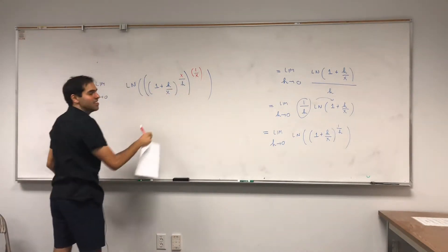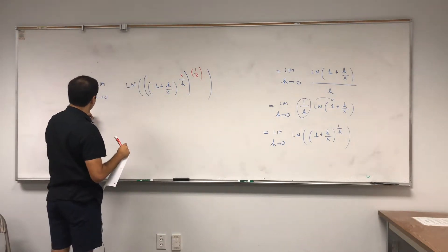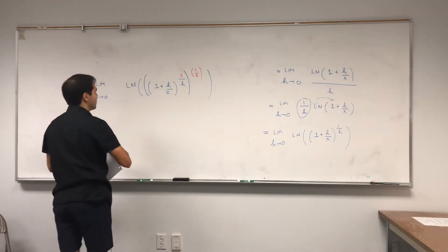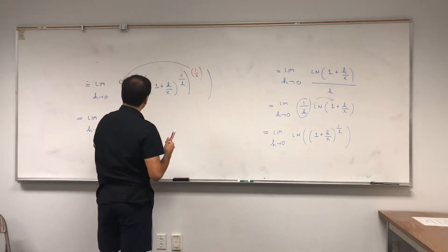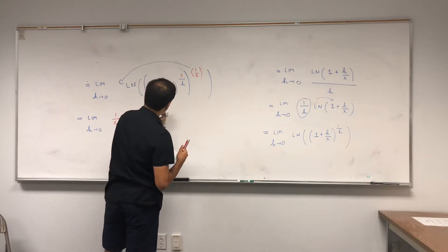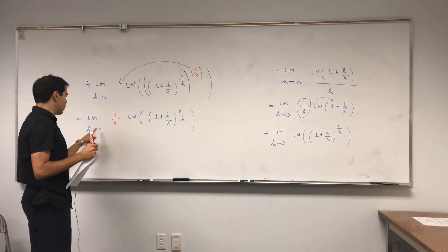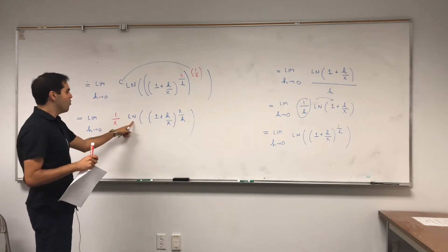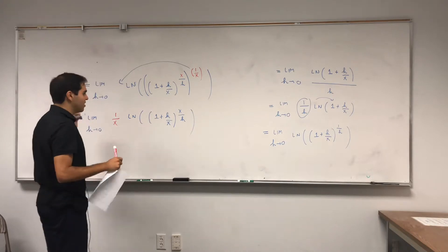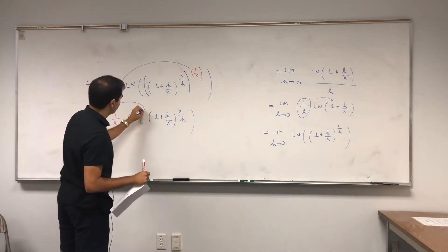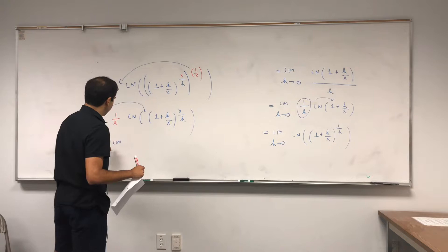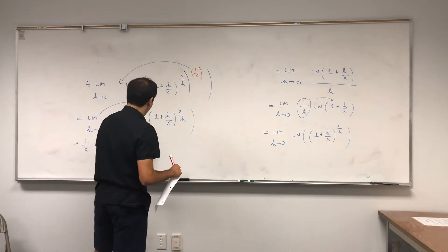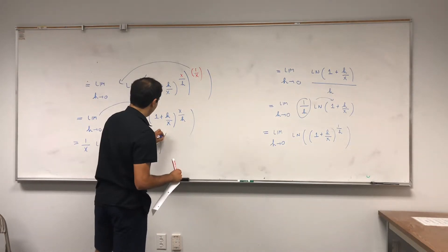And then precisely this 1 over x drops out, so it's limit h goes to 0 of 1 over x times ln of 1 plus h over x to the x over h. And here's the nice thing, this 1 over x doesn't depend on h, and moreover ln is continuous. So provided this is non-zero, which we'll see, we can just pull in the limit inside the ln. So it's 1 over x ln of limit h goes to 0 of 1 plus h over x to the x over h.